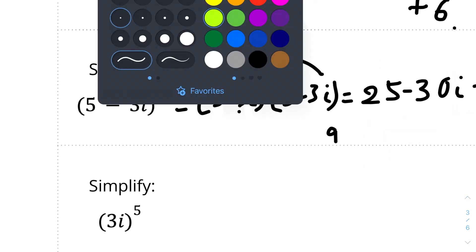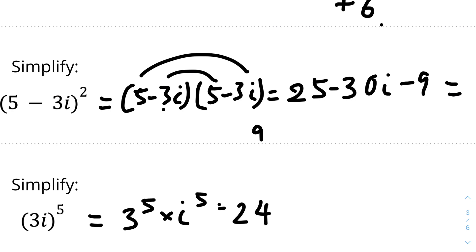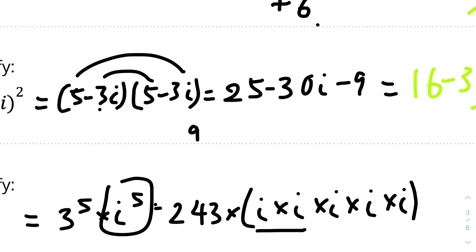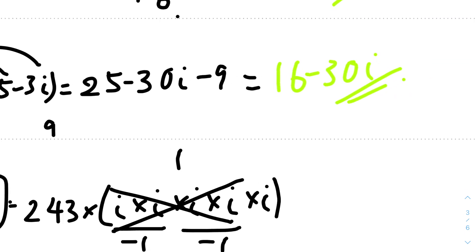The last question: simplify (3i)^5. This equals 3^5 times i^5. 3 to the power of 5 is 243. For i^5, we write i multiplied by itself 5 times: i × i × i × i × i. The first pair of i × i equals negative 1, and the next pair also equals negative 1. Negative 1 times negative 1 is 1, so those cancel to give 1, leaving us with just i. Therefore the answer is 243i.